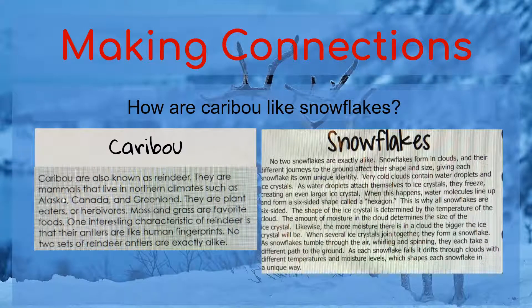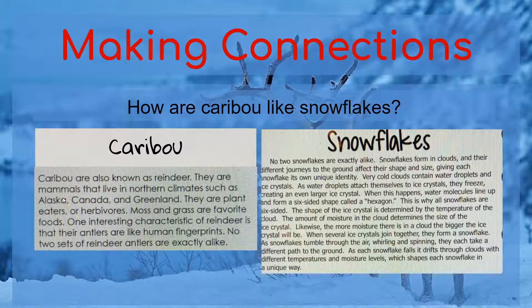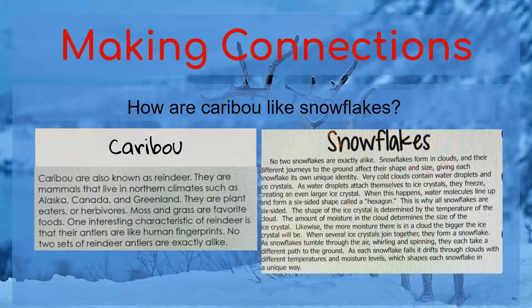Let's look at these two stories. One is about caribou and the other is about snowflakes. Caribou are an animal and snowflakes are precipitation that falls from the sky. Those two things seem pretty different, but I bet there's something similar that ties these passages together. My question says: how are caribou like snowflakes? First, let's read about caribou. Caribou are also known as reindeer. They are mammals that live in northern climates such as Alaska, Canada, and Greenland. They are plant eaters or herbivores. Moss and grass are favorite foods. One interesting characteristic of reindeer is that their antlers are like human fingerprints — no two sets of reindeer antlers are exactly alike.